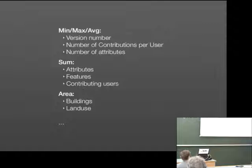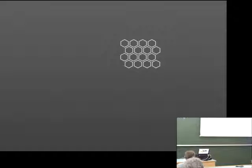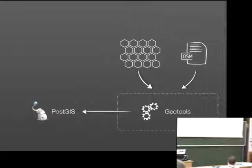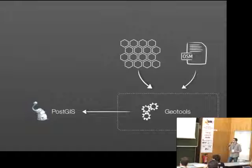How does it exactly work? First, we divided the area of Europe, except for Russia and Turkey, into a set of hexagonal cells. We took the planet file from OSM, and for each of these cells, we calculated the values I mentioned before. The calculation was done using the GeoTools library, and we saved the calculated values along with the geometries and a timestamp for each attribute into a Postgres database.